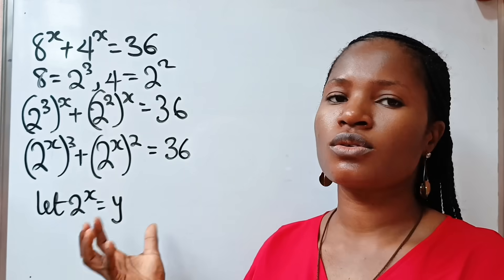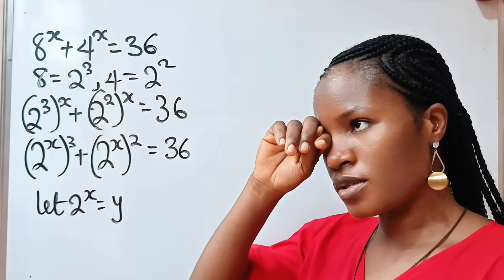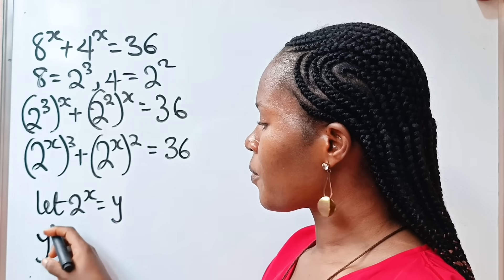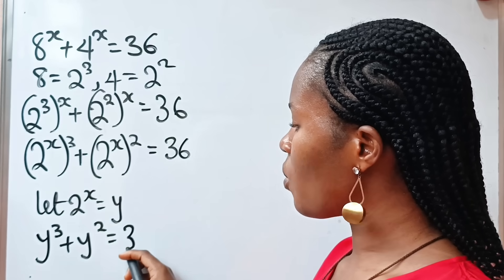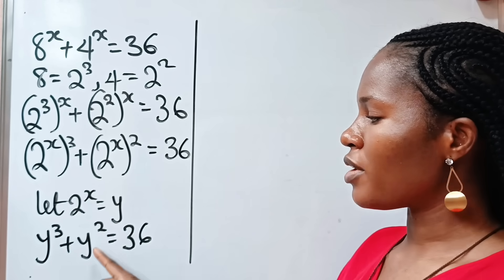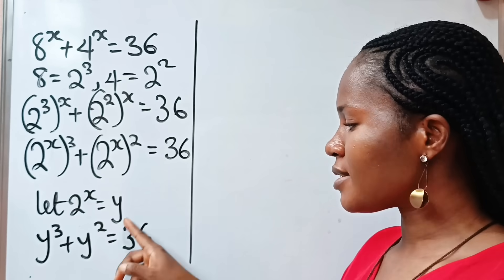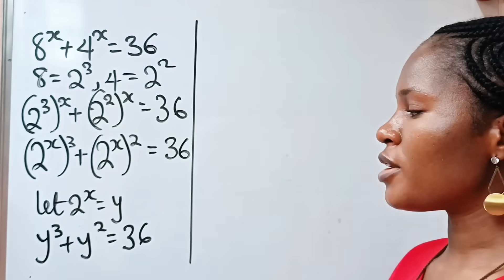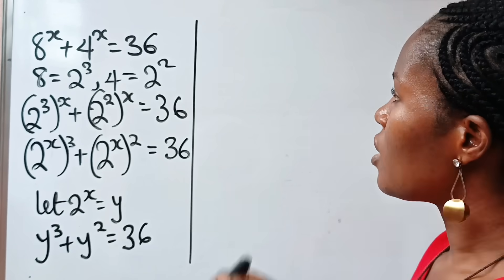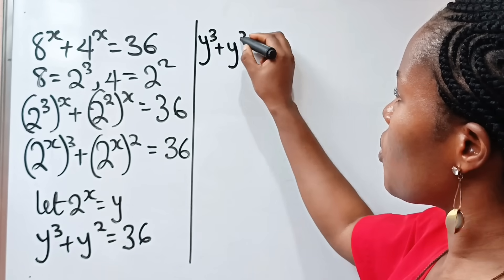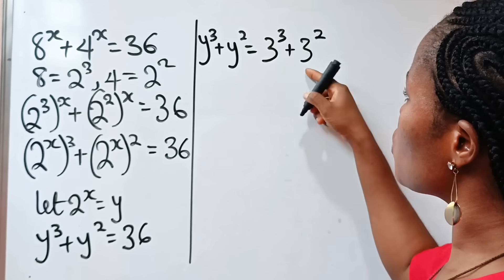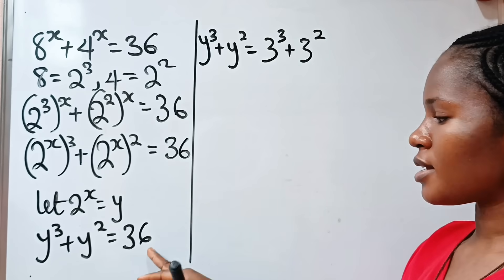At the end of this video we are also going to verify the answer we got. So we are going to replace 2 to the power of x with y. We have y to the power of 3 plus y to the power of 2 is equal to 36. Now, a particular number raised to the power of 3 plus that same number raised to the power of 2 equals 36. So 36 can be expressed in those terms — the number is 3. So 3 to the power of 3 gives us 27, and 3 to the power of 2 gives us 9, and 27 plus 9 is 36.